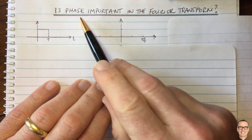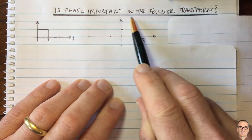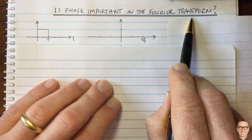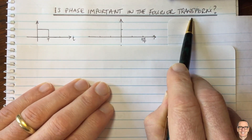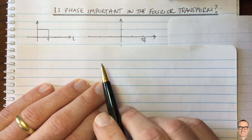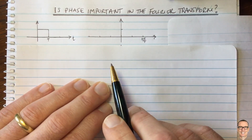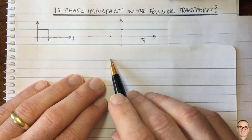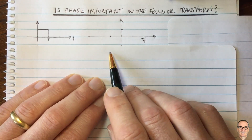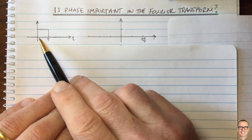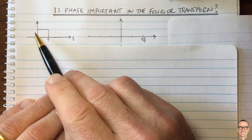So is phase important in the Fourier transform? We often see in textbooks that only the amplitude of the Fourier transform is plotted. So is phase really important? Let's look at this example.